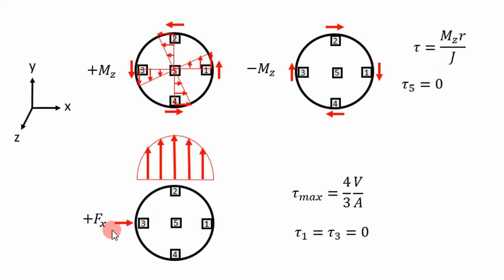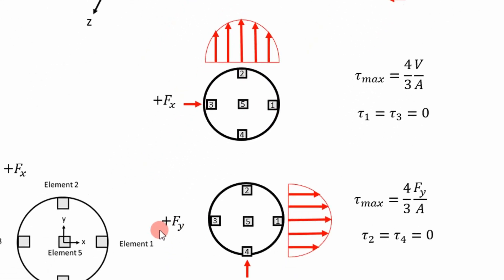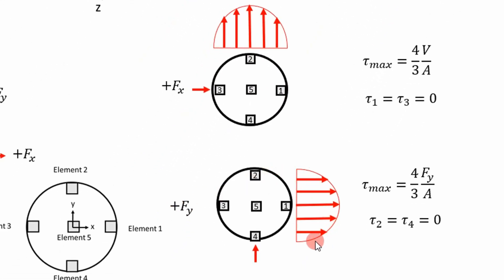For the shear load in the X direction, our worst case shear stress occurs at the middle at elements two, five, and four. It's given by the stress values from this equation. We do not have any stress at one and three, given the distribution shown here. In the Y direction, we have the same shear stress distribution, except our worst case shear stresses occur at three, five, and one. It's given by the exact same equation.